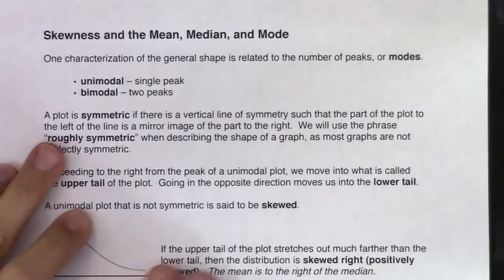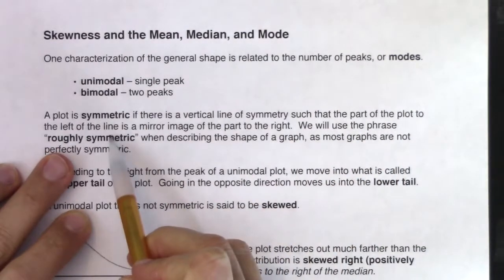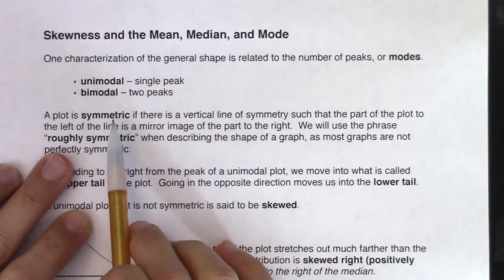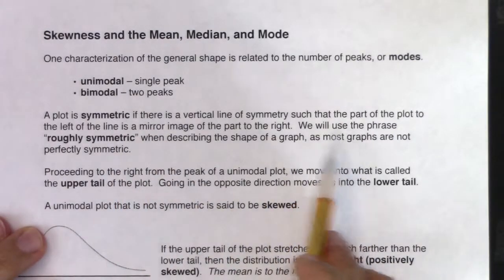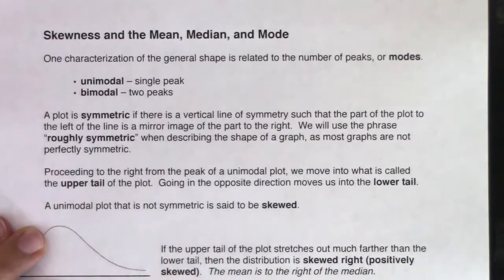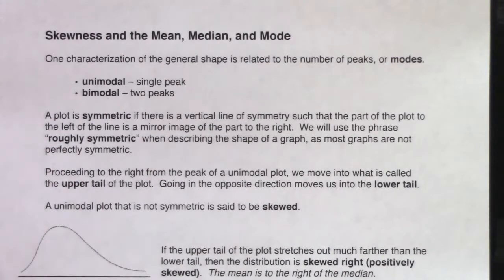A plot or graph is symmetric if there is a vertical line of symmetry such that the part of the plot to the left of the line is a mirror image of the part to the right. In the real world, data is super messy. It's very rare where something is exactly symmetric, so we will use the phrase roughly symmetric when describing the shape of a graph. If you do ever run across a perfectly symmetric graph, use the phrase symmetric, but for all real world data, it's roughly symmetric.